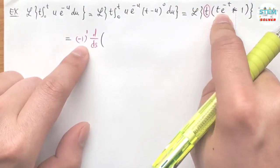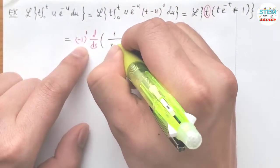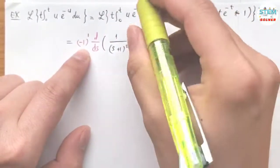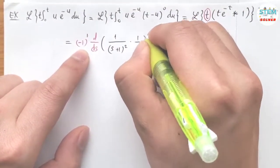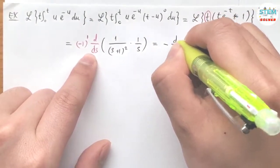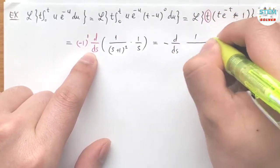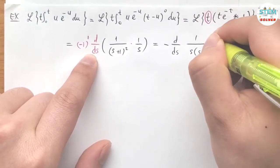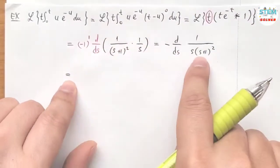Now the L of this is 1 over s plus 1 squared times 1 over s. Now let me multiply this together. So I have negative of the first derivative of 1 over s times s plus 1 squared.